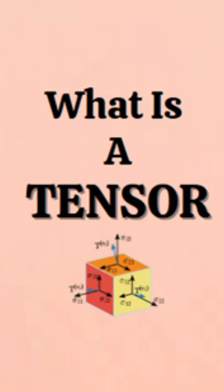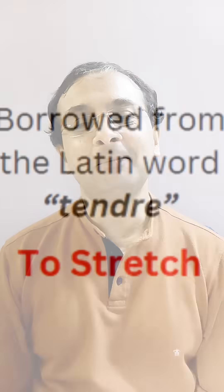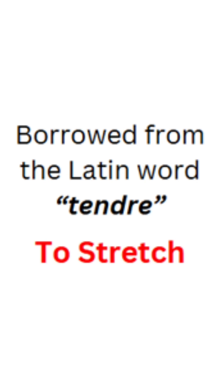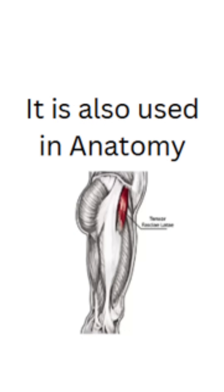What are tensors in physics? The concept of tensors actually comes from a Latin word which means to extend something, to stretch something. Tensors are also used in anatomy, where it refers to a kind of muscle which stretches.